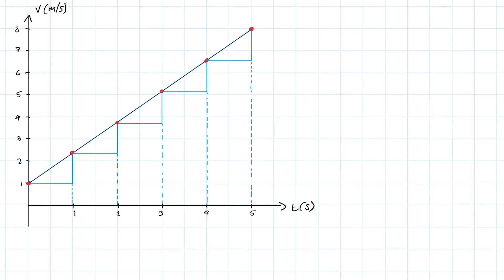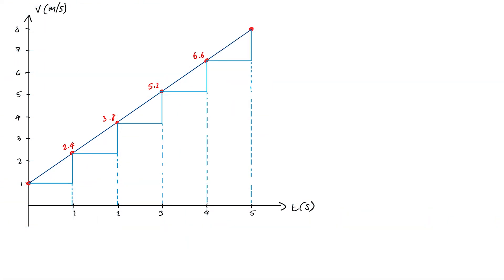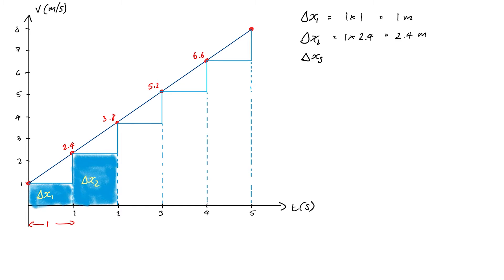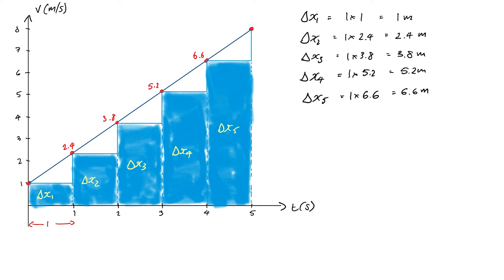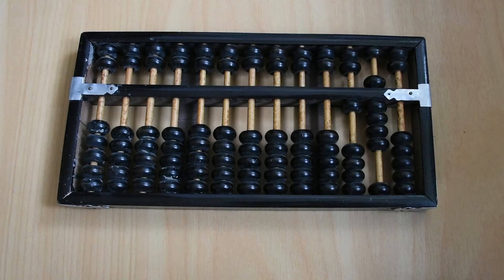For each interval the velocities are approximately 1, 2.4, 3.8, 5.2, and 6.6. Each rectangle has a base of 1, so the individual displacements are: delta x1 equals 1 meter, delta x2 equals 2.4 meters, delta x3 equals 3.8 meters, delta x4 equals 5.2 meters, and delta x5 equals 6.6 meters. Adding all those together gives an overall displacement of 19 meters.